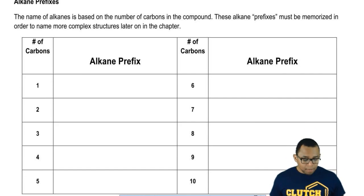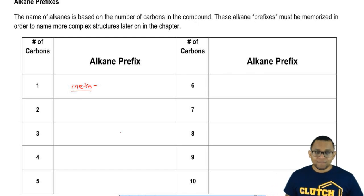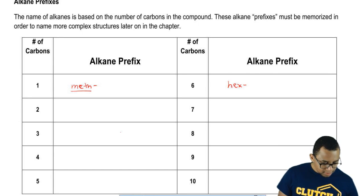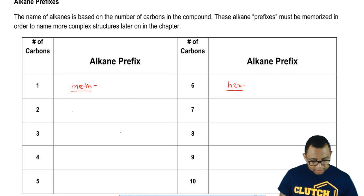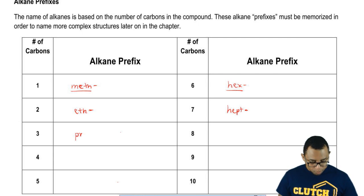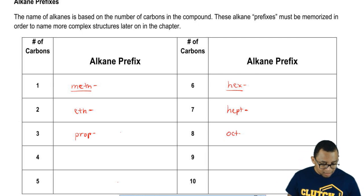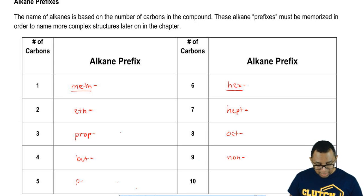If you have one carbon, your prefix name is meth — M-E-T-H, meth. If you have two carbons, then it's eth. Seven carbons is hept. Three carbons is prop. Eight is oct. Four is but. Nine is non. Five is pent. Six is hex. And then ten is dec.